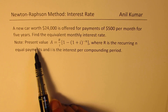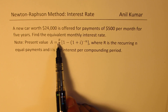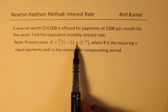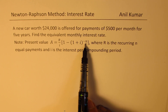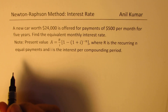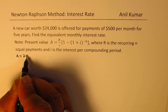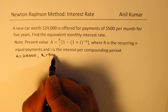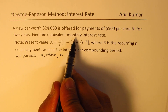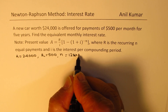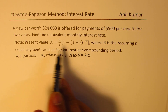The annuity formula states that the present value A equals the recurring payment amount R divided by the interest rate per compounding period I, within brackets: 1 minus (1 plus I) to the power of minus n. Here n is the number of compounding periods. In our case, A is $24,000, R is $500 per month, and n is 12 times 5, which equals 60.